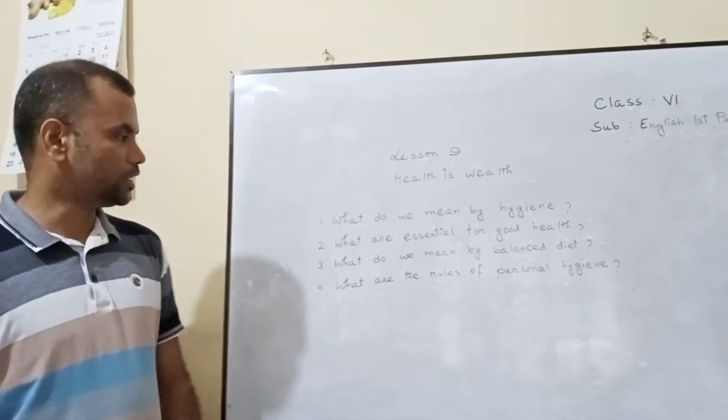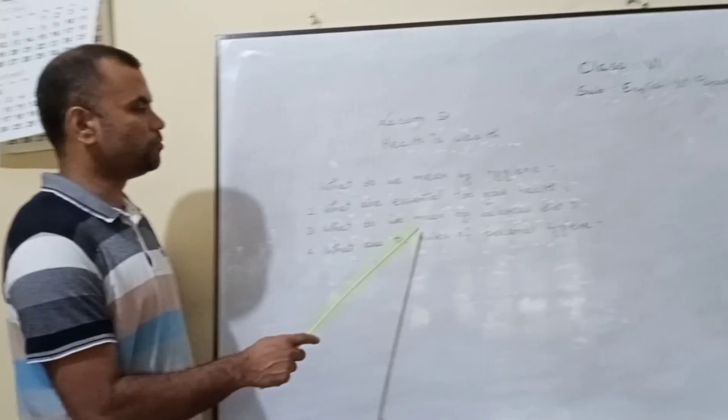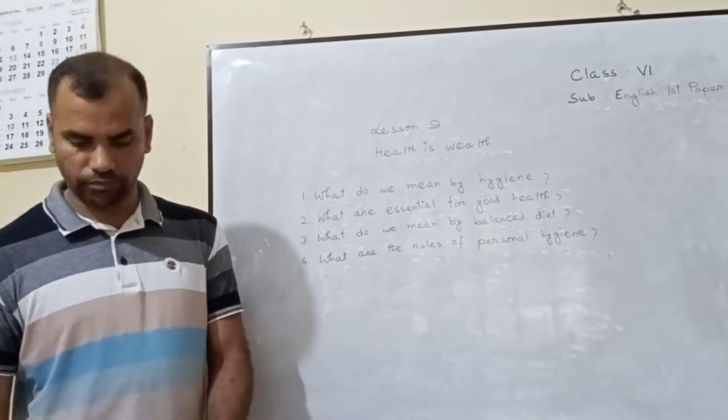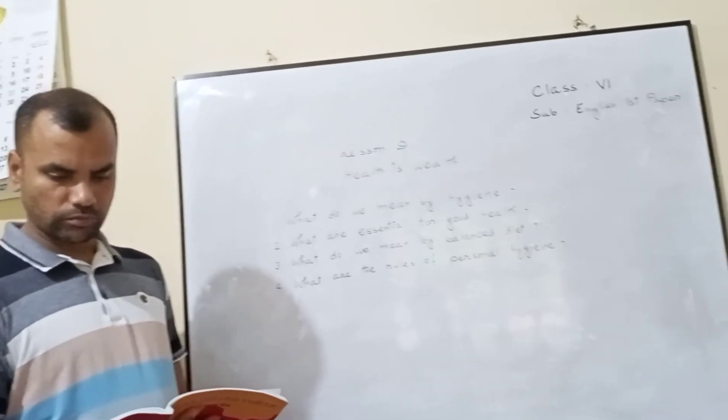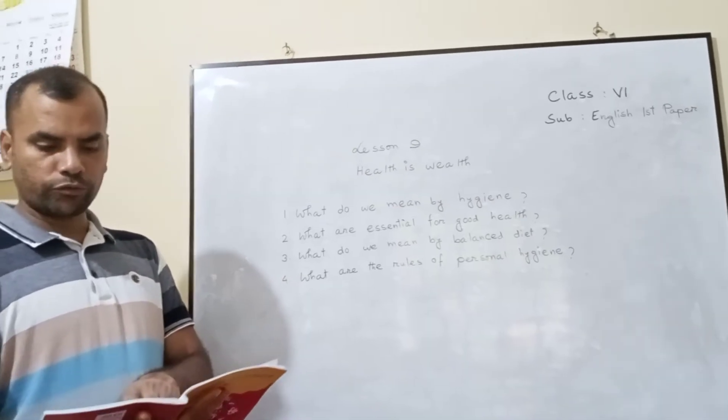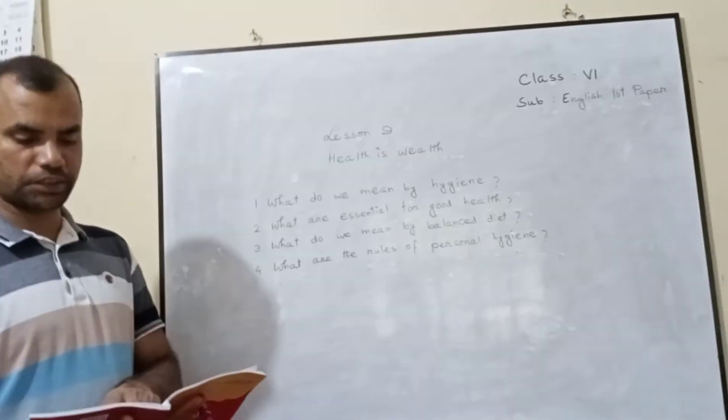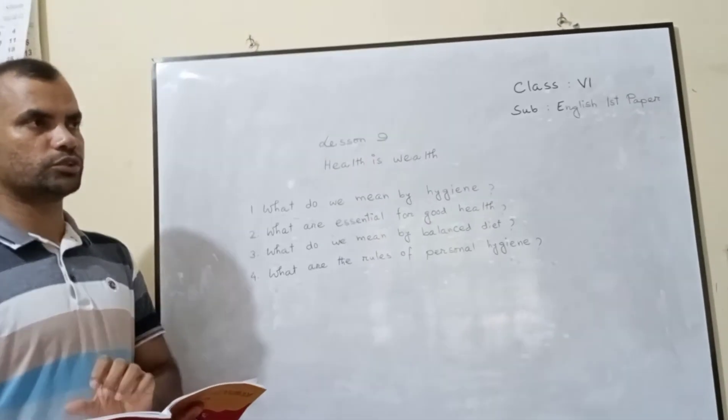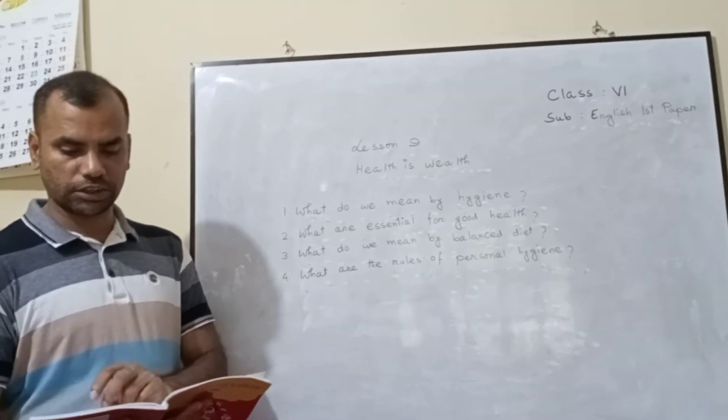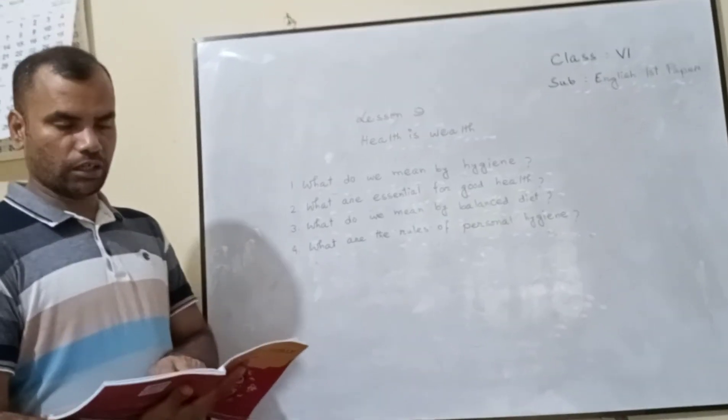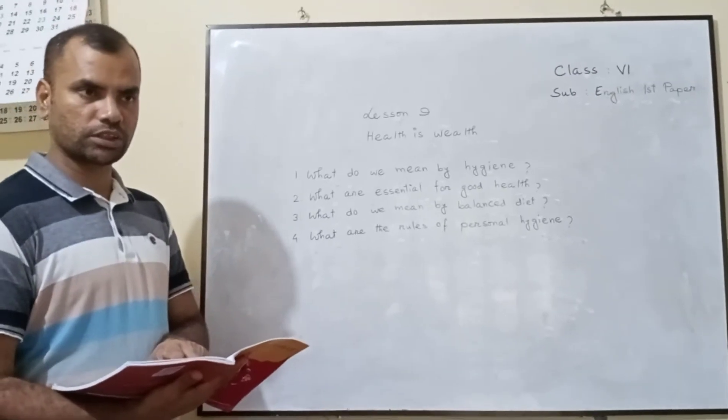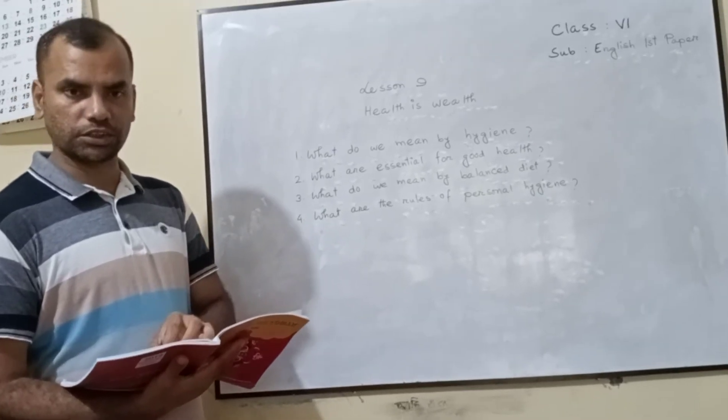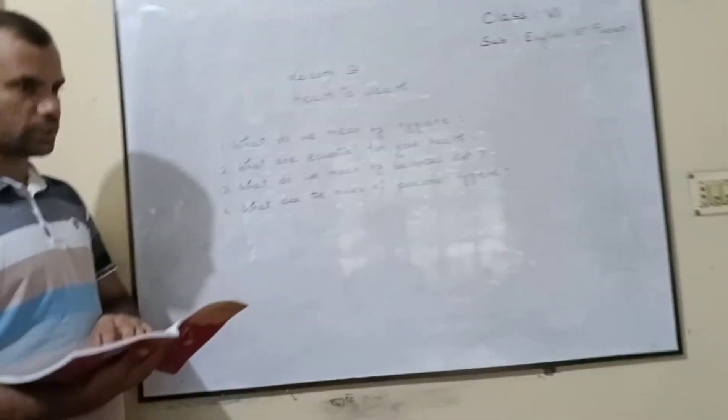Number three, dear students, you see, the question is, what do we mean by balanced diet? So, our food should contain correct proportion of carbohydrates, fat, protein, vitamins, minerals, and water in it. Our food, that is to say, our food should contain the six ingredients of food. That is carbohydrates, fat, protein, vitamins, minerals, and water. If our daily food contains only six ingredients, then it is called balanced diet. So, this is the answer.